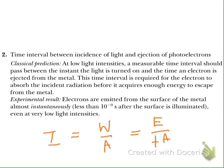According to classical physics, light should gradually give energy to the electron and then eject it. But from the experimental results, it gives the electron energy instantaneously. This is against the concept of classical physics, and at that time, scientists could not explain this.